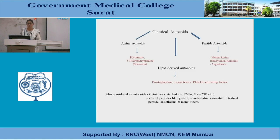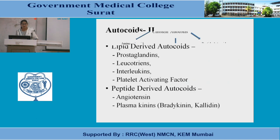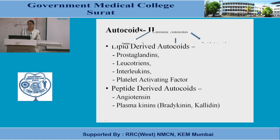This finishes the topic of 5-hydroxytryptamine. Coming to the next topic, which is lipid-derived autacoids — prostaglandins, platelet activating factor, and leukotrienes. In autacoid 2 — lipid-derived autacoids — we have prostaglandins, leukotrienes, interleukins, and platelet activating factor. In peptide-derived autacoids, we come across angiotensin and plasmokinins (also called bradykinin or kallidin). We will now focus on lipid-derived autacoids.